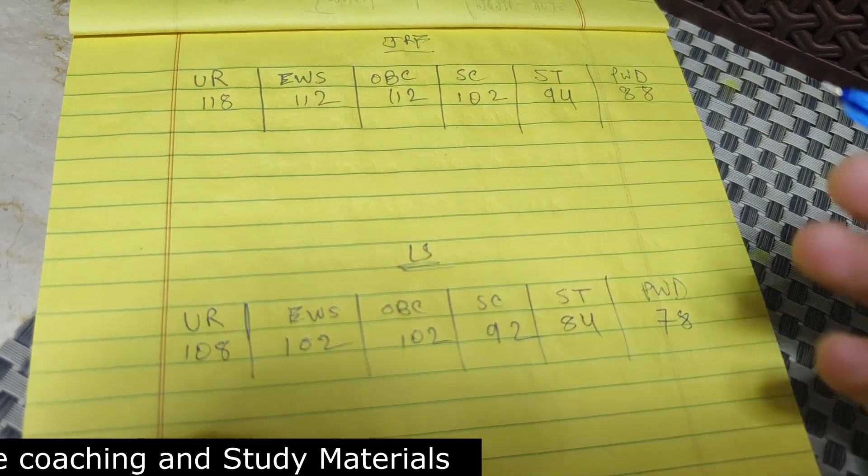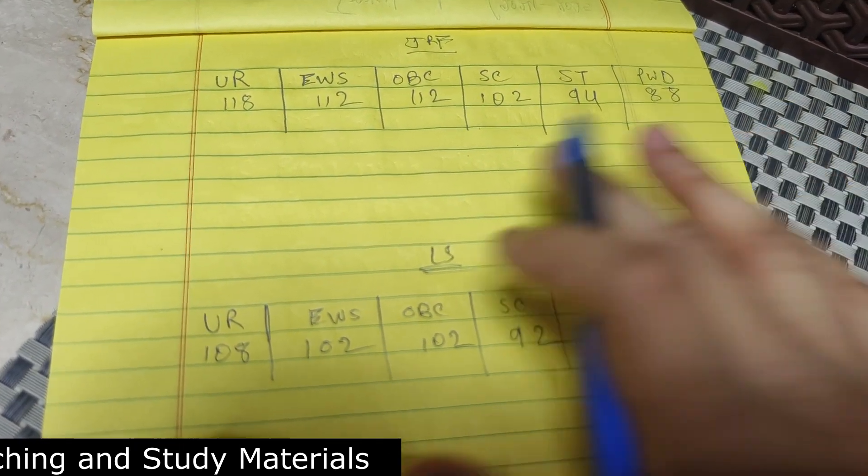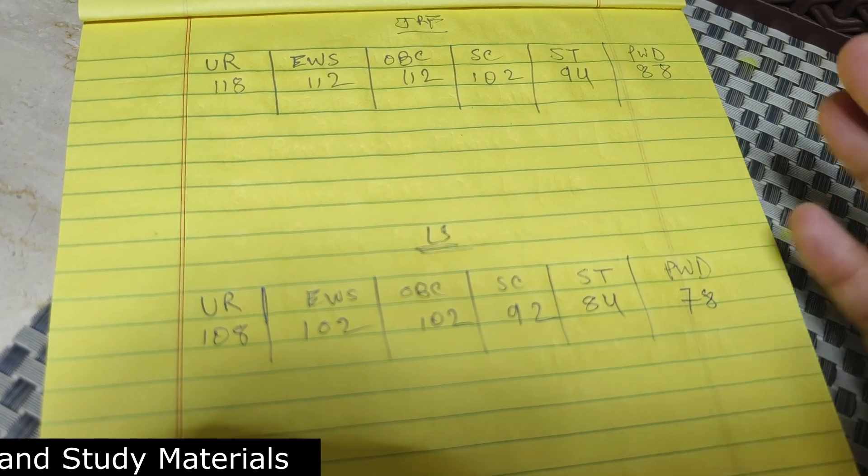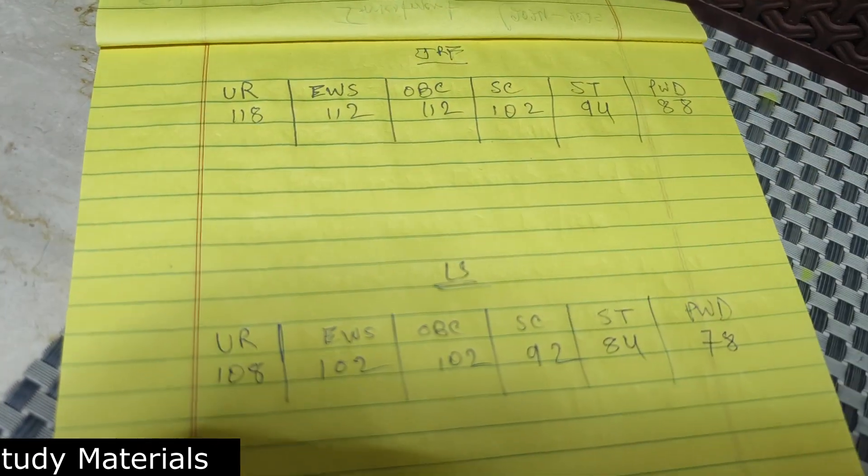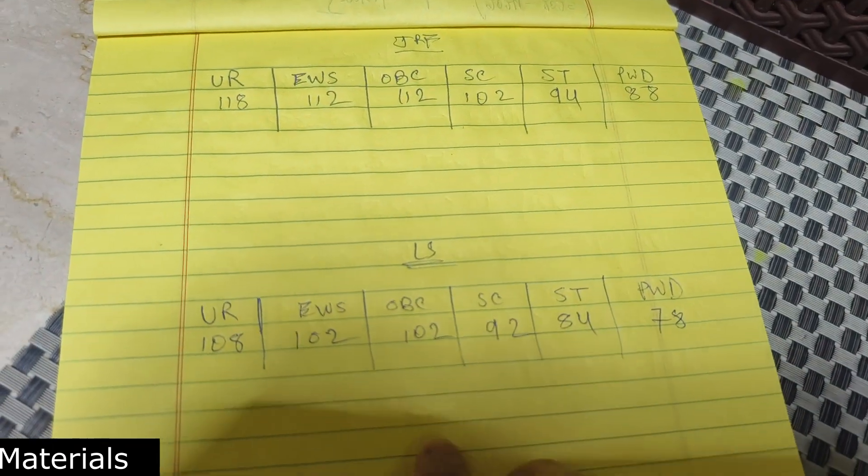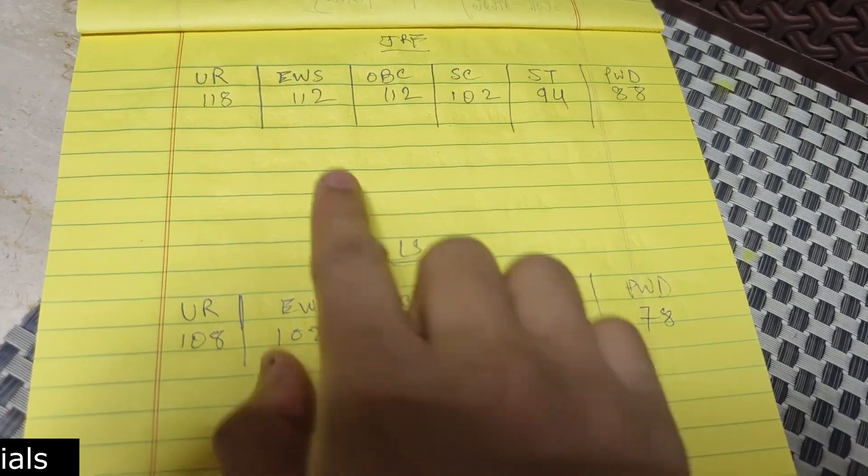Now the question remains, because CSIR NET never declared the cutoff in marks, they declared in percentile. So I'll also give you percentile right now. So if you are now checking your score,